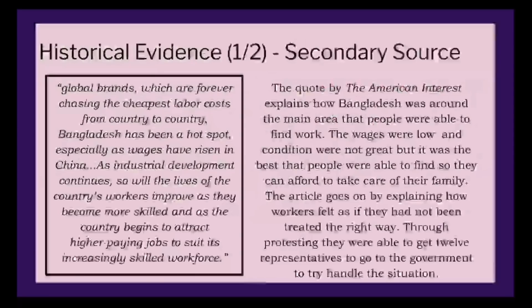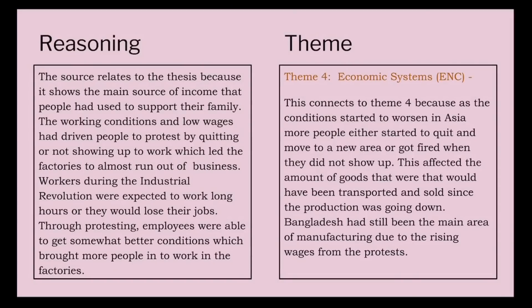For our next piece of historical evidence, we have a quote from The American Interest that explains how wages in China were low and working conditions were not great. The source explains how Bangladesh had been a hot spot for work ever since 12 representatives went to the government to protest, and how workers would start to leave factories to find better places to work. Bangladesh went on to raise wages for people with more experience in factories. This quote relates to the thesis because it shows how people supported their families and the sacrifices they made to adapt to working conditions — working 12 hours a day, six days a week. This relates to Theme 4 — Economic Systems — because as people left their jobs for better opportunities, it affected the flow of goods in and out of Asia.